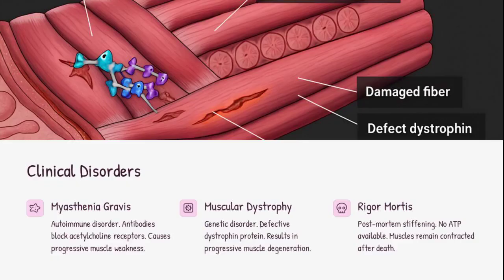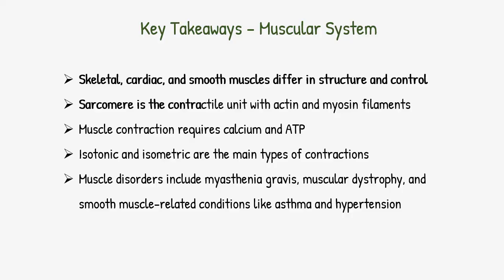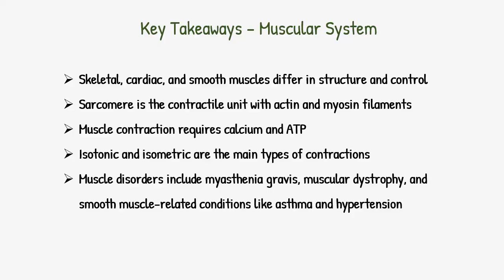Before we wrap up, let's look at some clinical links. Myasthenia gravis, an autoimmune disease, disrupts neuromuscular transmission. Muscular dystrophy involves defective proteins, causing degeneration. And rigor mortis is due to the absence of ATP after death, leaving muscles locked in a contracted state. To summarize: the three muscle types have unique structures and controls; the sarcomere drives contraction with actin and myosin; calcium and ATP are essential; muscles contract in various ways — isotonic or isometric; and disorders can arise from failures at any point in this system.